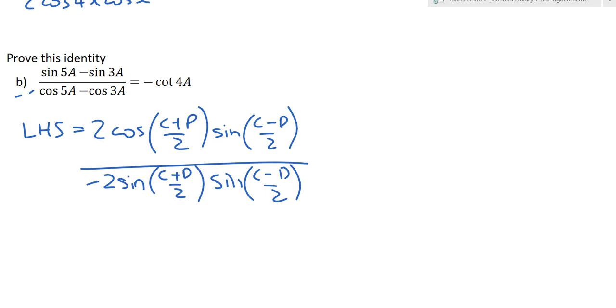Now, I'm just going to go through and replace the c on the top line with 5a and the d on the top line with 3a. And on the bottom line, again, the c with 5a and the d with 3a. So, you get 5a plus 3a is the same thing as one was before. So you get 2 cos 4a sine a all over negative 2 sine 4a sine a.